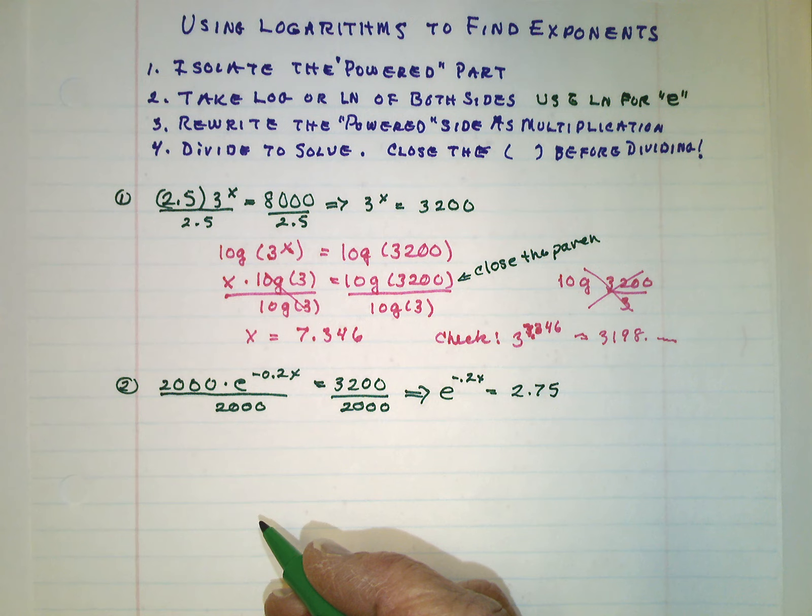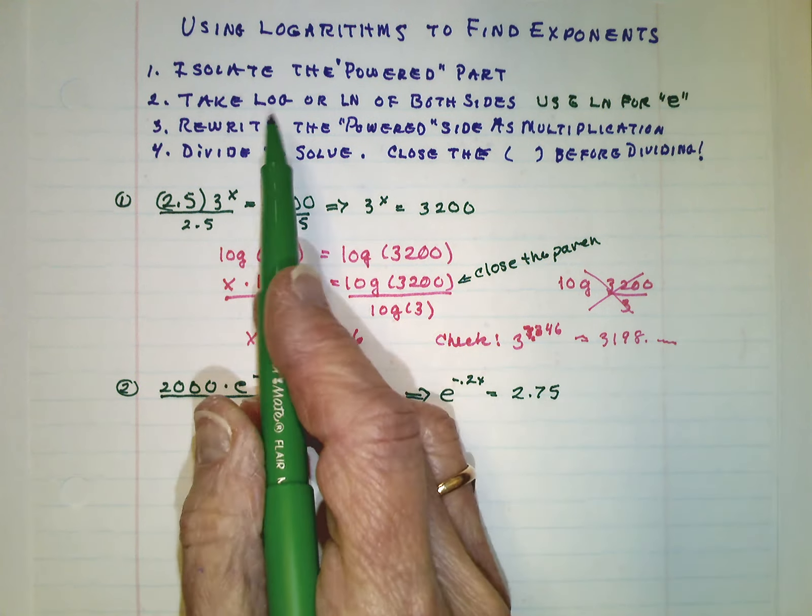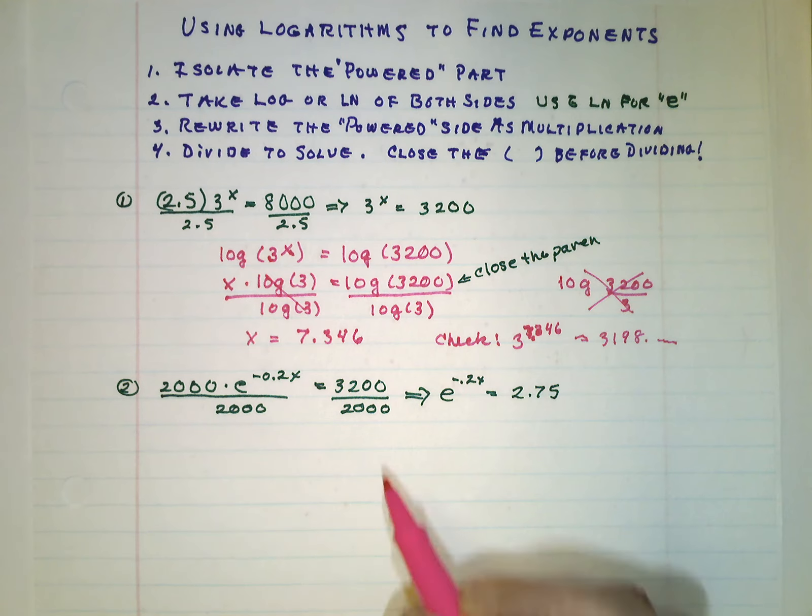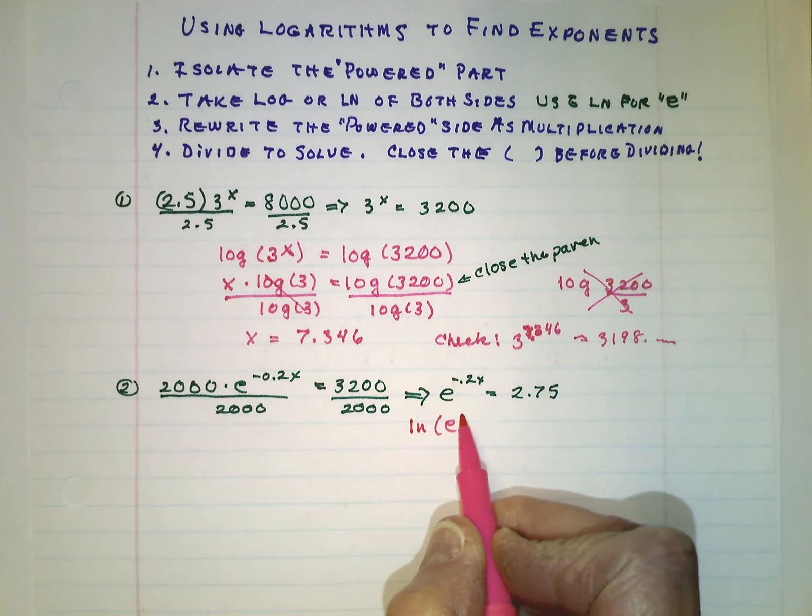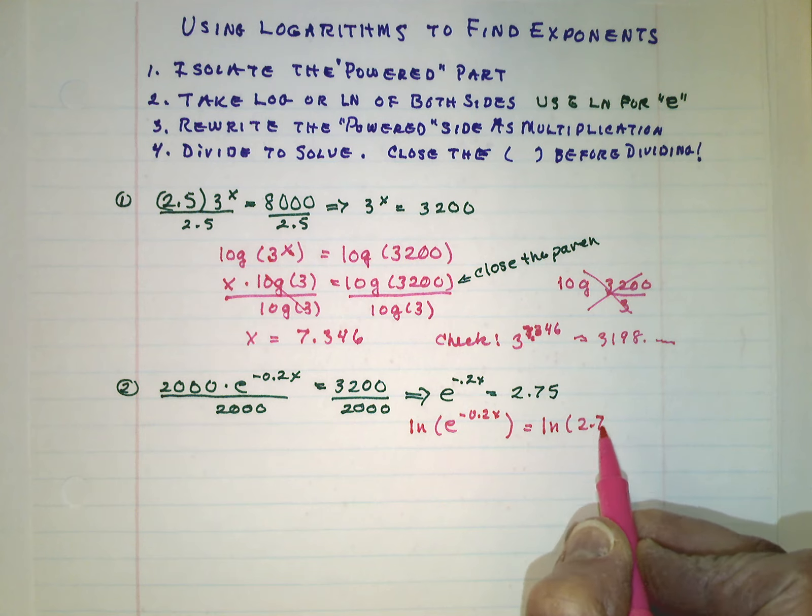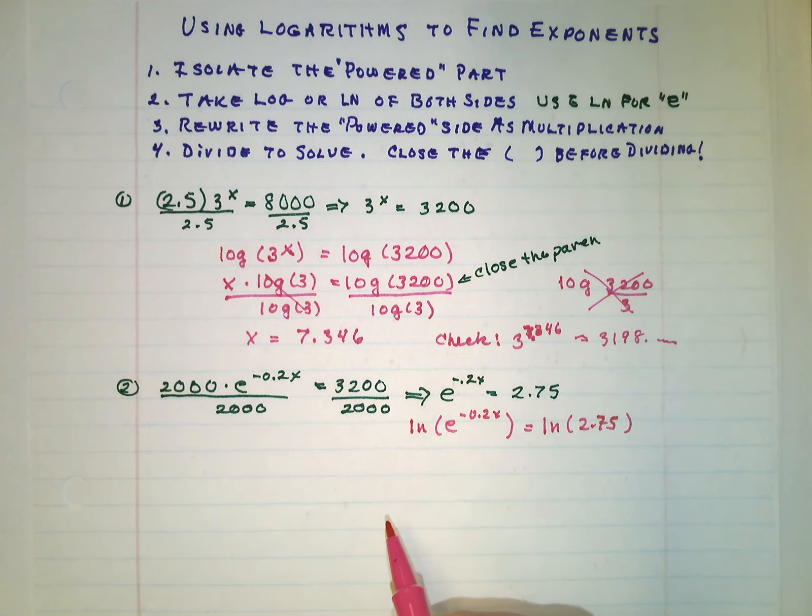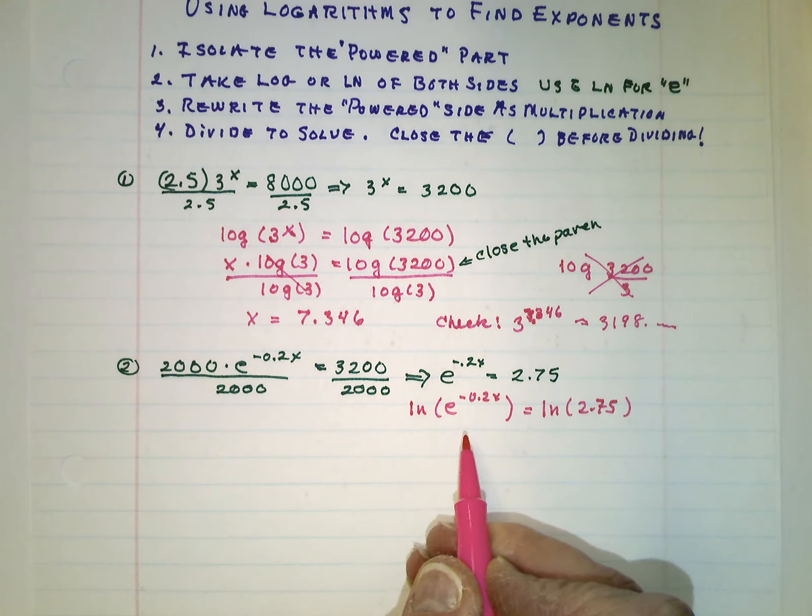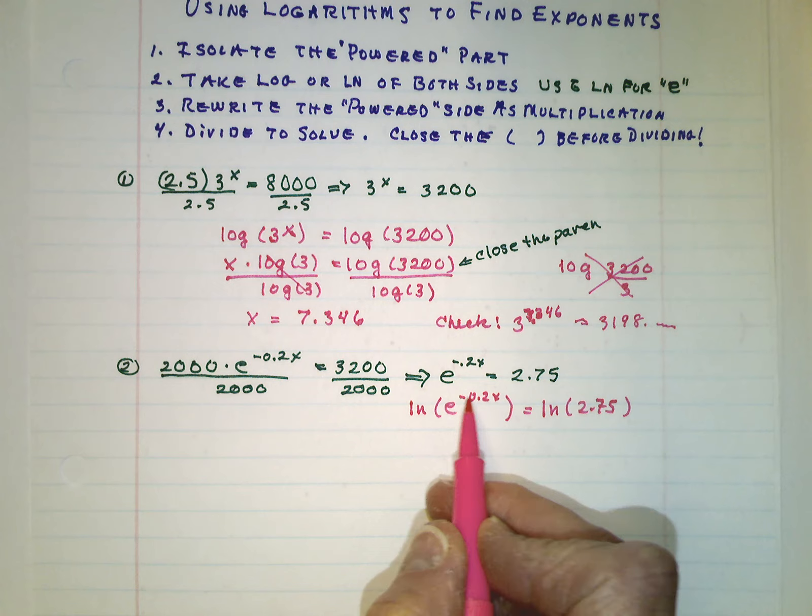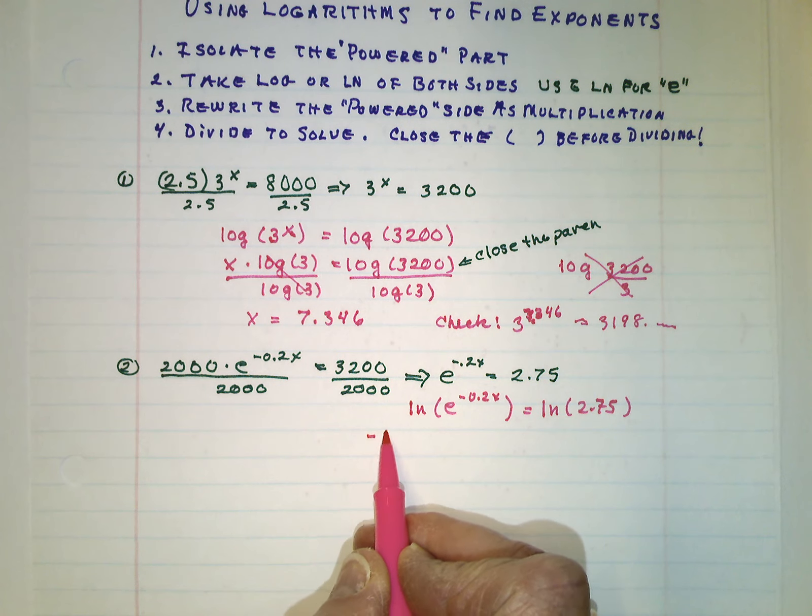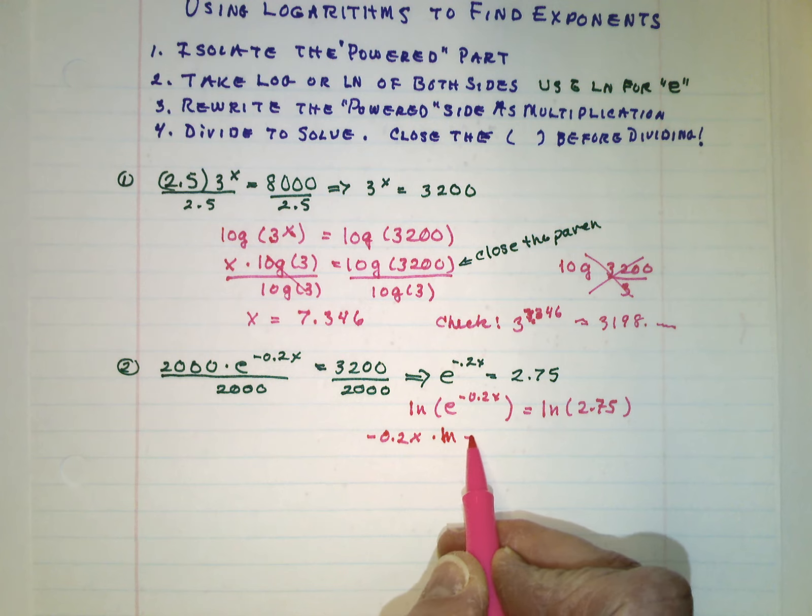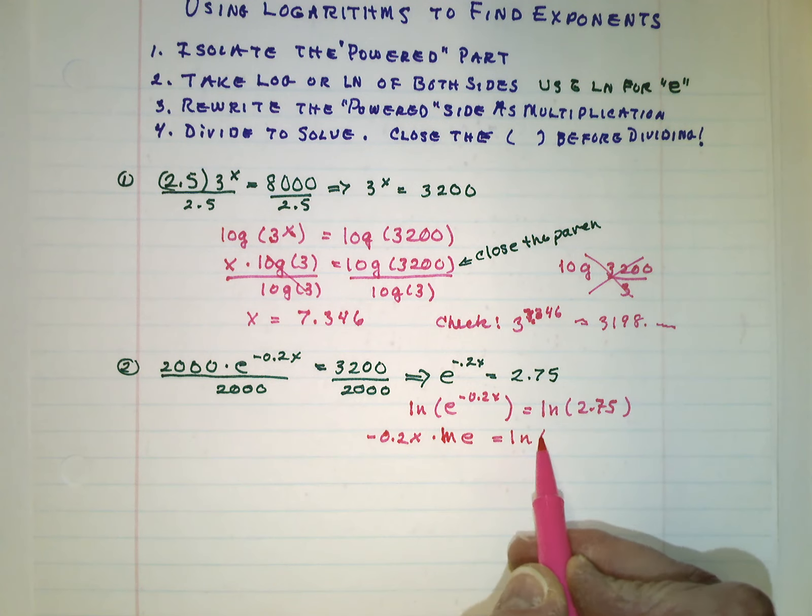Well, that's not too bad now. We're ready for the next step. Take either the log of both sides or the ln of both sides. Because this is e, we're going to take the ln of both sides. As long as we do it to both sides, it's legal. And now we're going to use that law of logarithms. That an exponent of something raised to a power can be written as multiplication. And we're going to pull the negative 2 tenths x out in front of the ln of e. Still equal to the ln of 2.75.